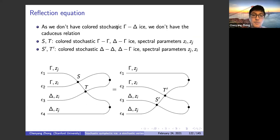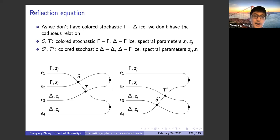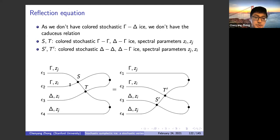Another integrability result for the colored model is the reflection equation. Since there is no stochastic gamma-delta ice, we cannot use the caduceus relation as in the uncolored case. Instead, we use a reflection equation where on the left-hand side a braid goes upward, is reflected, and comes back downward. The types of lines are gamma-gamma and delta-delta, so the R-matrices are of those types, with spectral parameters switched in the two cases.